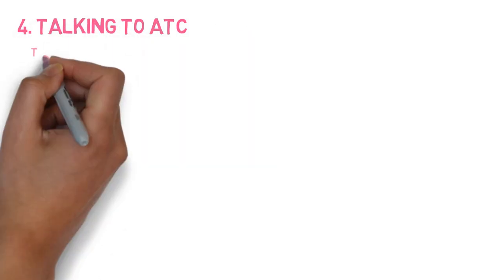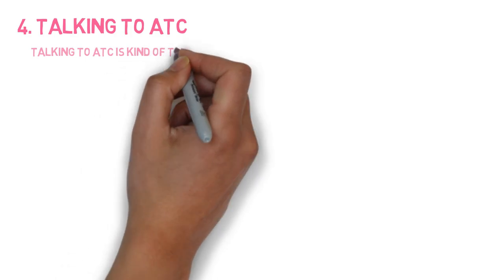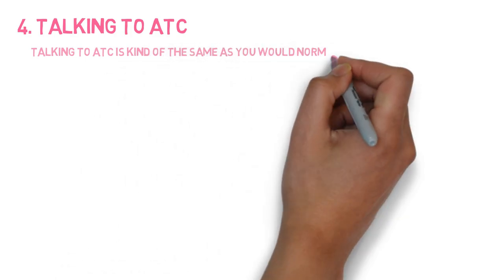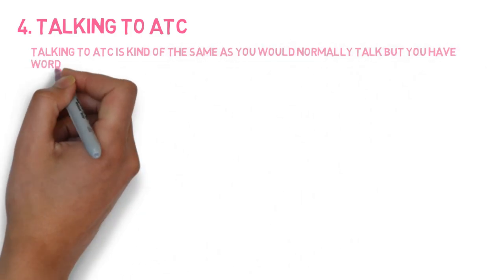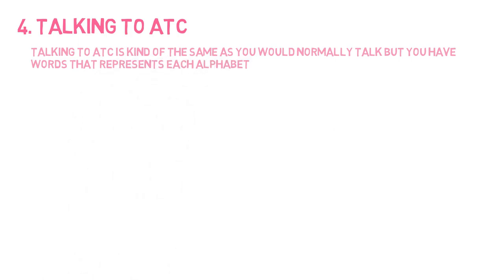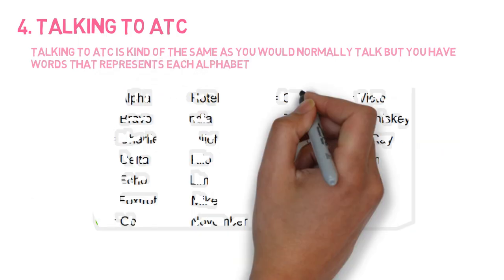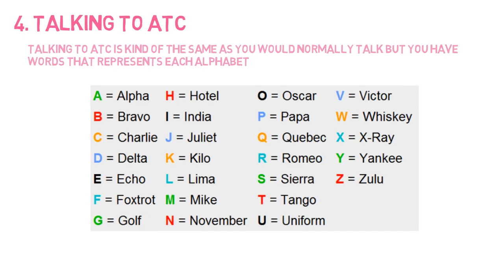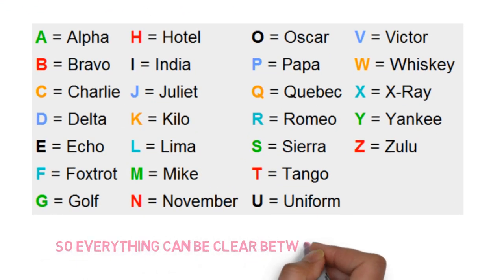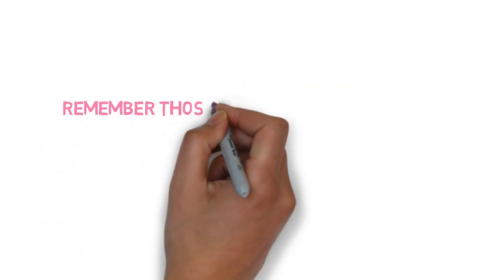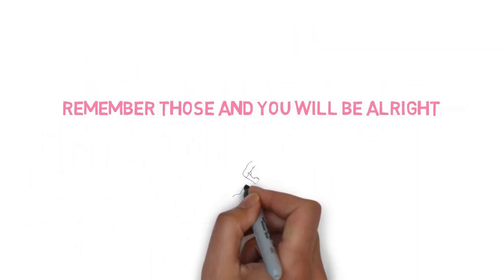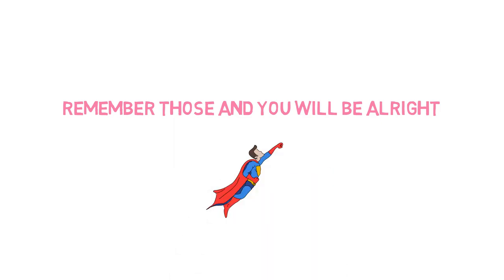Number four is talking to the ATC. Talking to the ATC is kind of like you would normally talk, but you'll have words that represent each alphabet and words that are used in aviation radio. If you use aviation words, everything can be clear between the pilot and ATC. Practice this before you start your training—that would be really helpful. I made a video about how to improve your communication with the ATC when you start your training, so you can go watch that also.